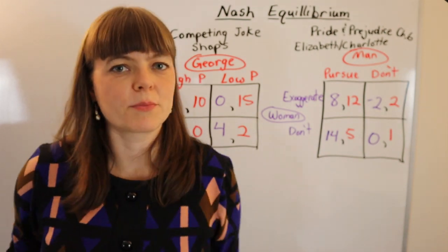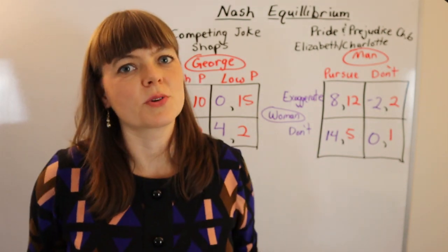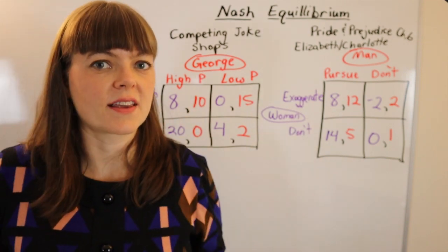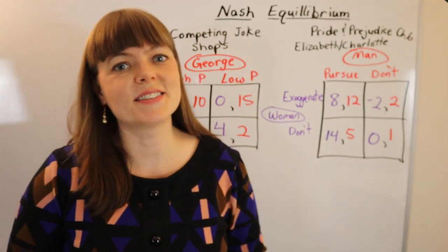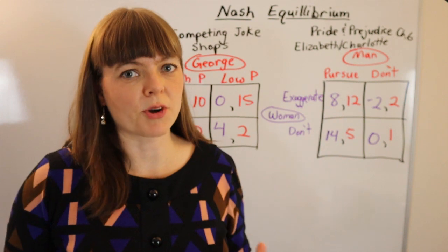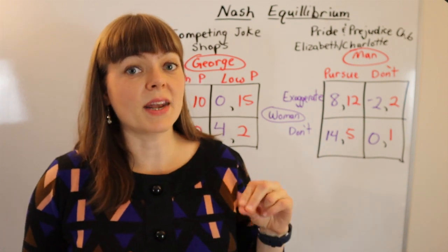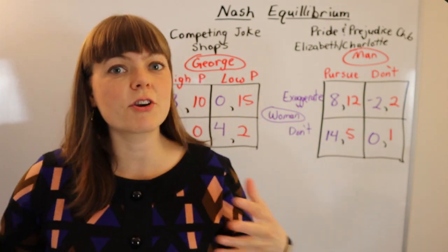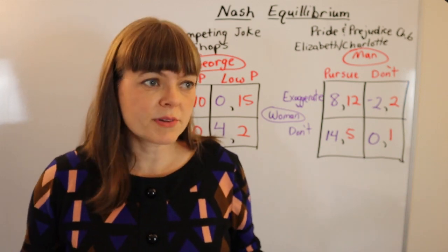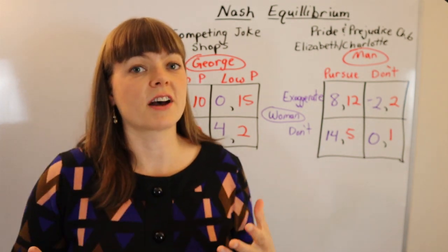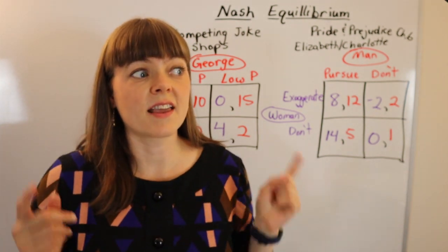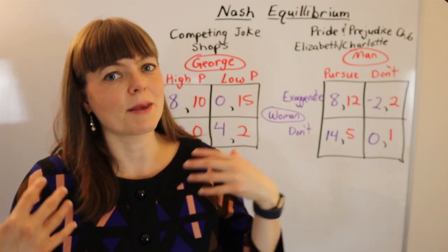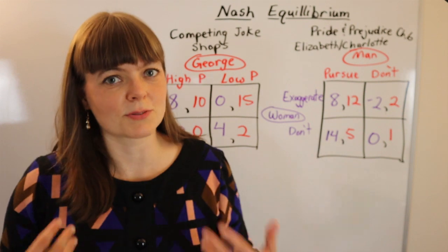I'm going to go through four examples of Nash equilibrium just to show you how to solve these quickly. Nash equilibrium is a no-regrets equilibrium, meaning after the dust is settled and after we've figured out what every player is doing, every player can look at what the other players have done and say: given what you did, I'm happy with my choice. I've made a best response to your best response.